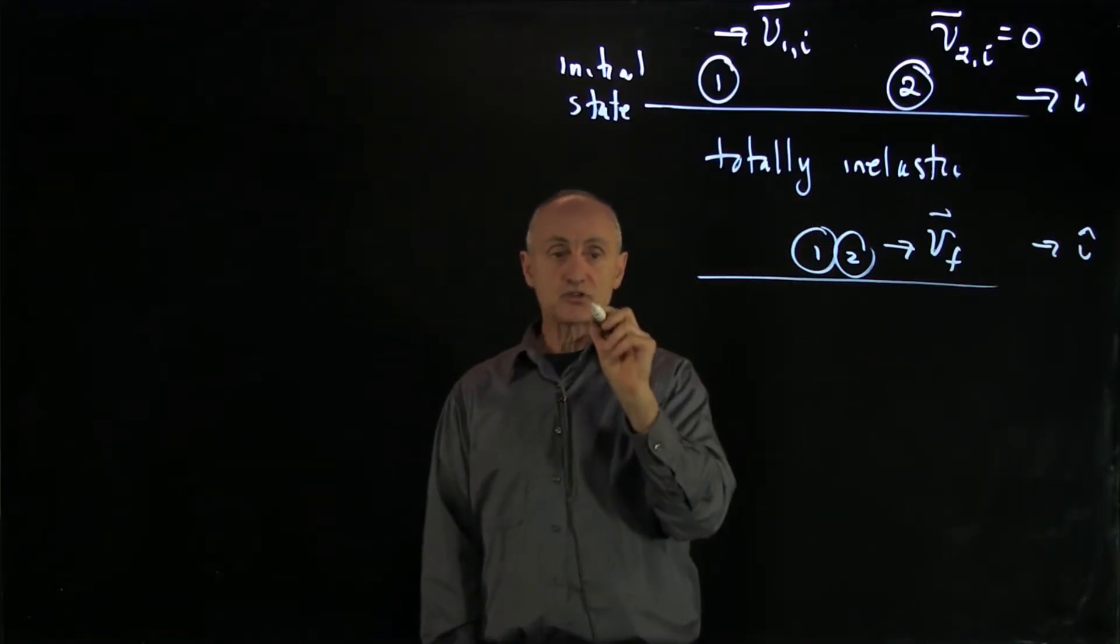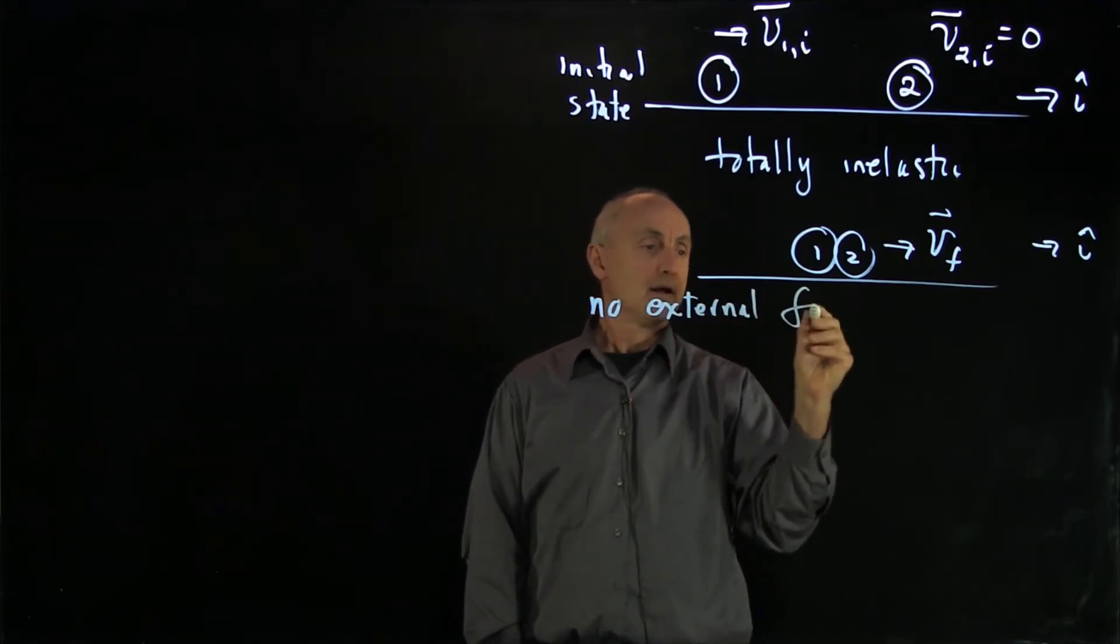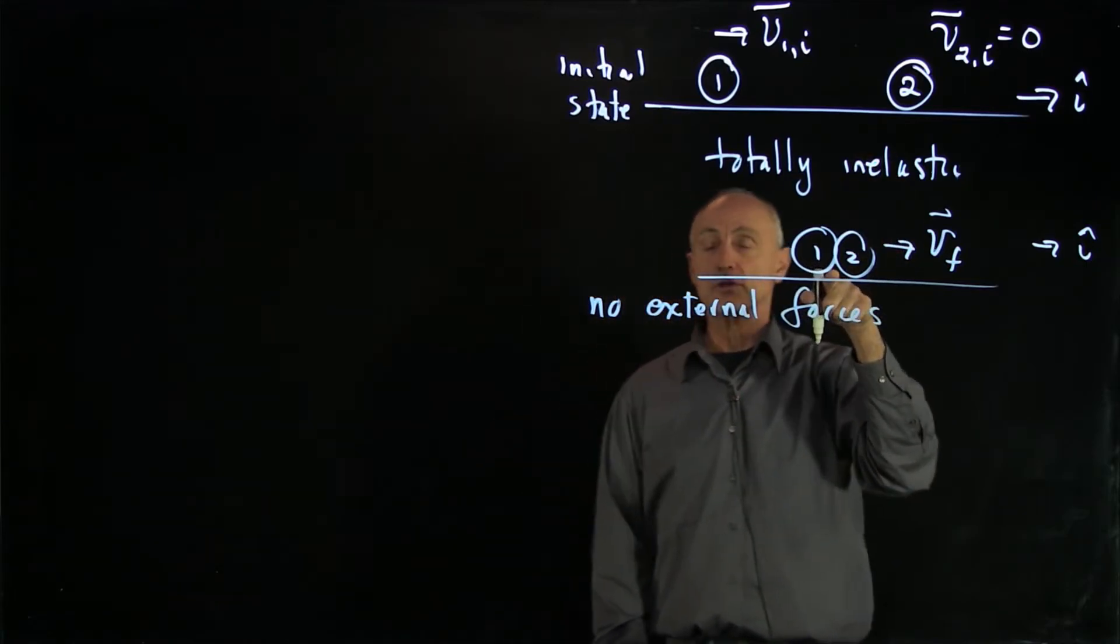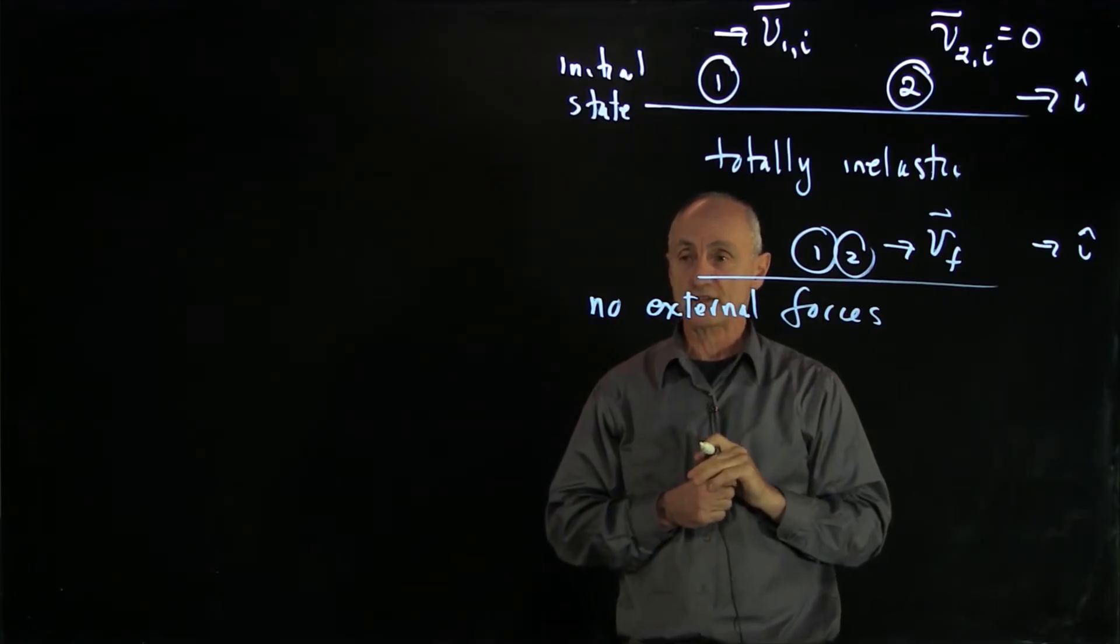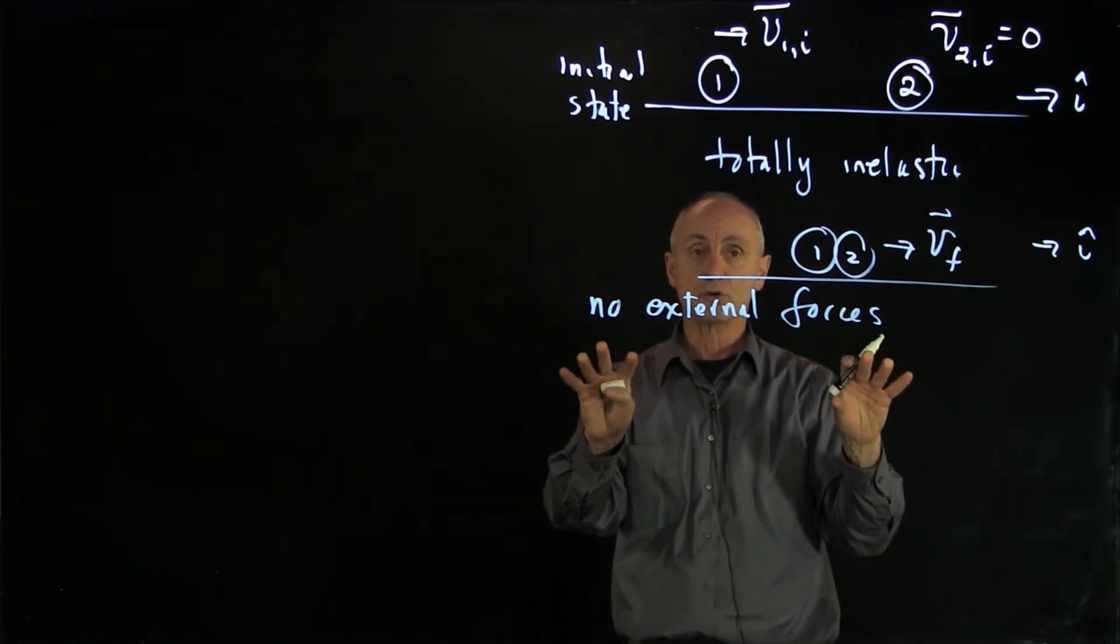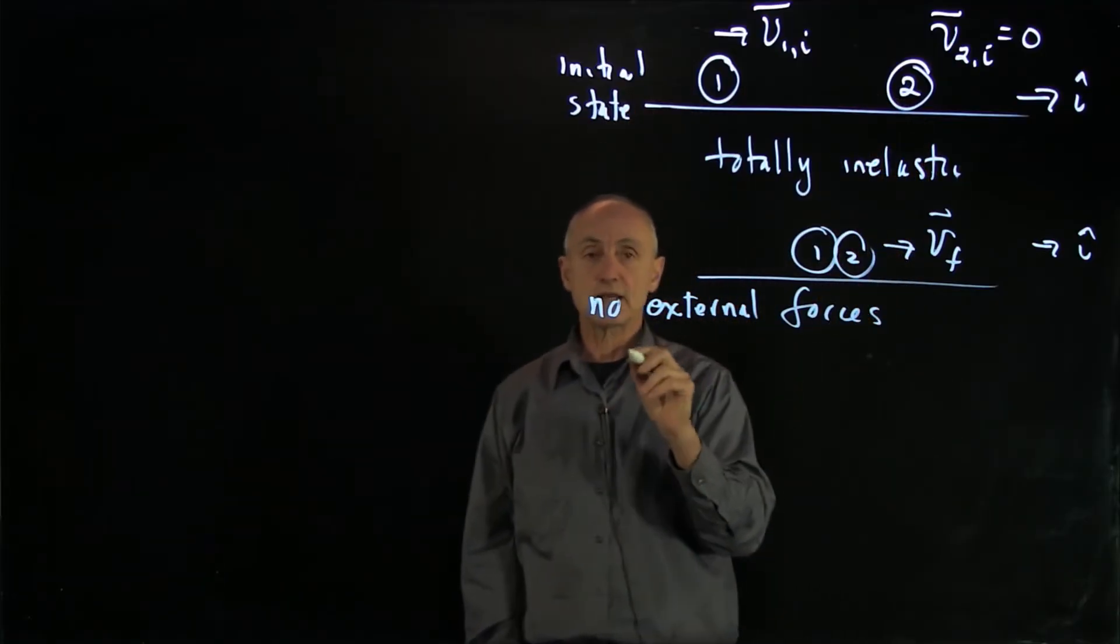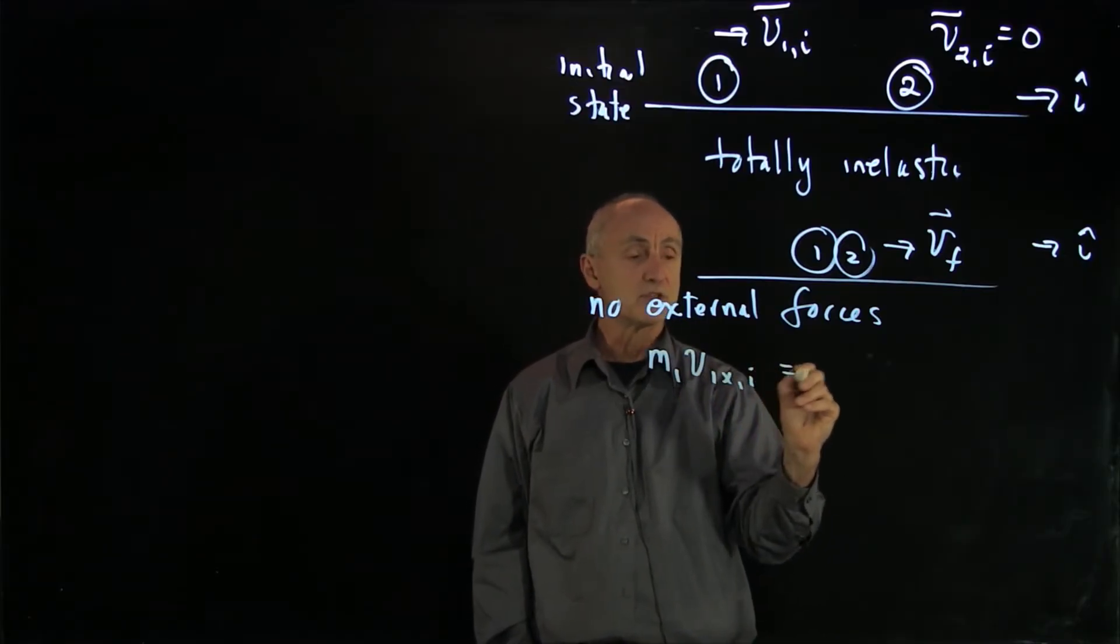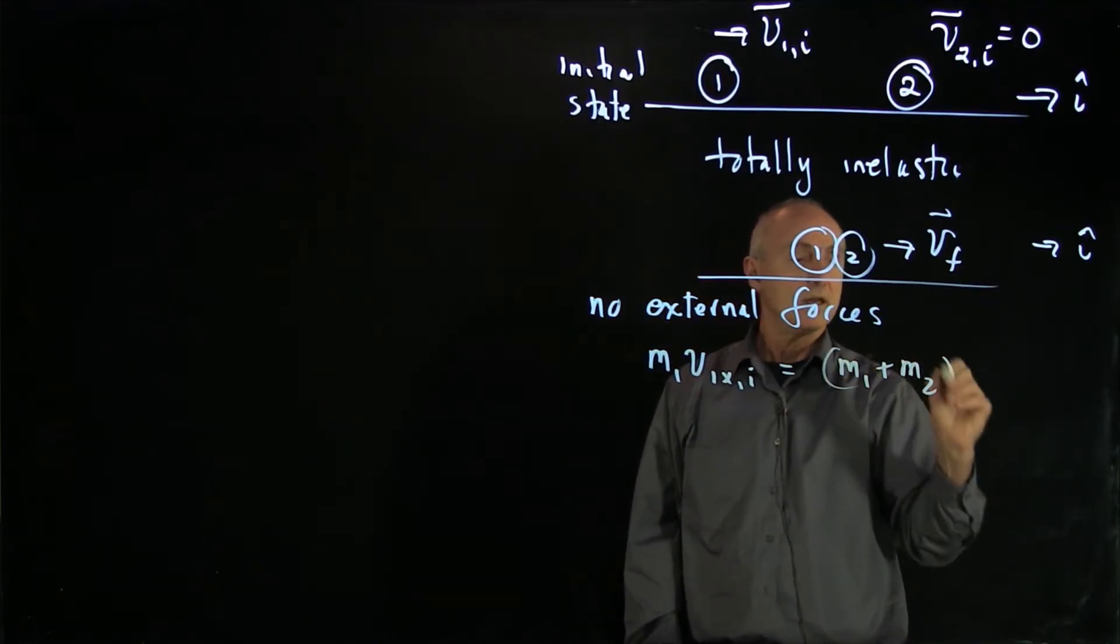Now, again let's assume that there's no external forces. There are clearly internal forces that are acting between the two particles as they collide. But remember we know that internal forces cancel in pairs. And if there's no external forces, the momentum of the system is constant. So we can write down our momentum condition very simply in terms of components. We have some incoming momentum into the system, and all of that incoming momentum is going out.